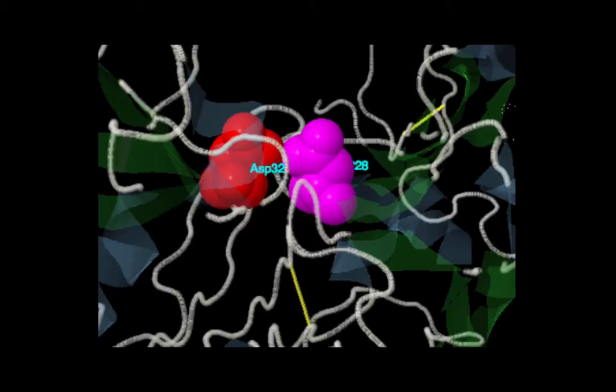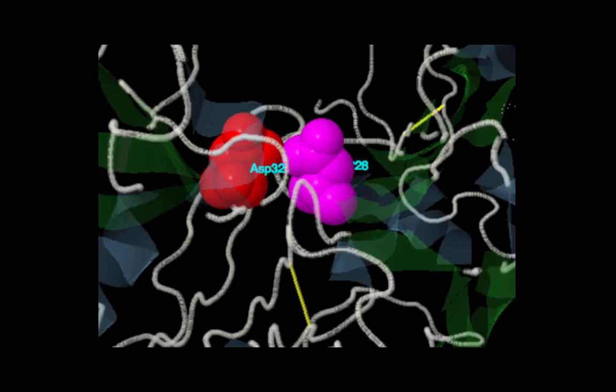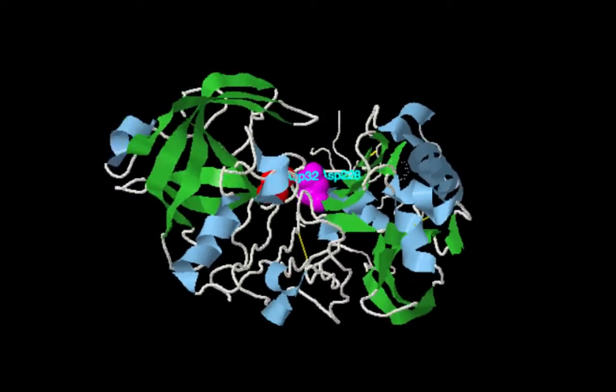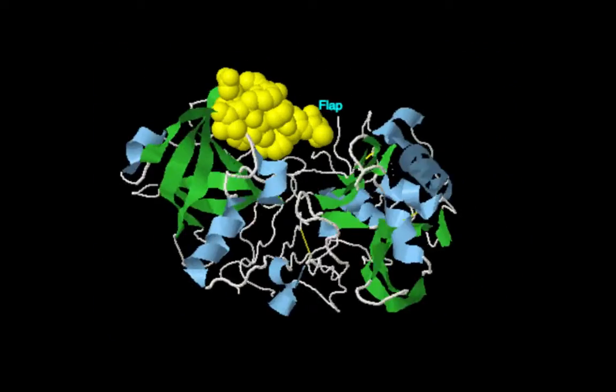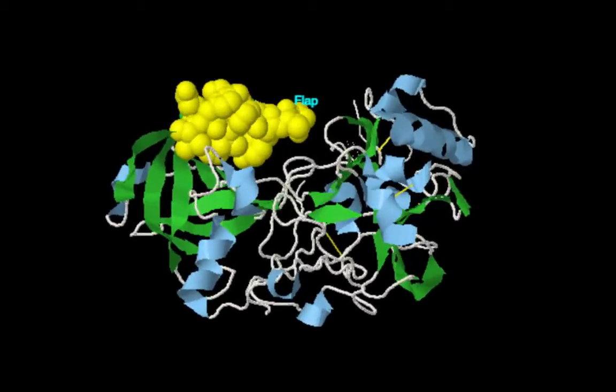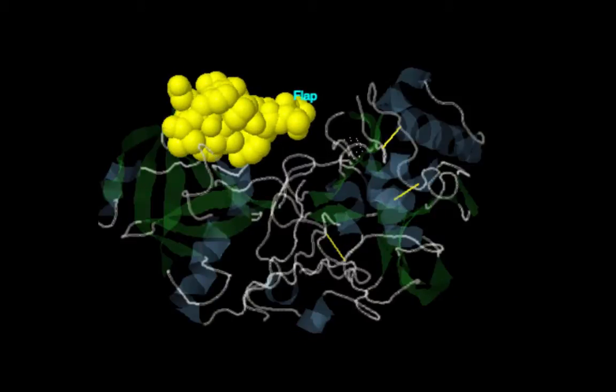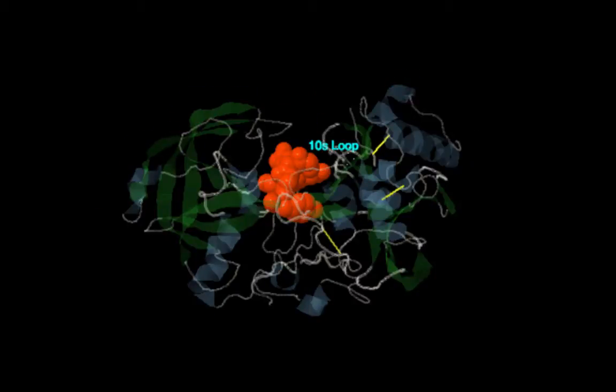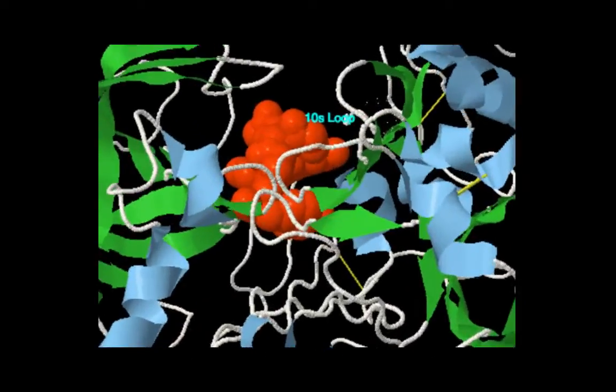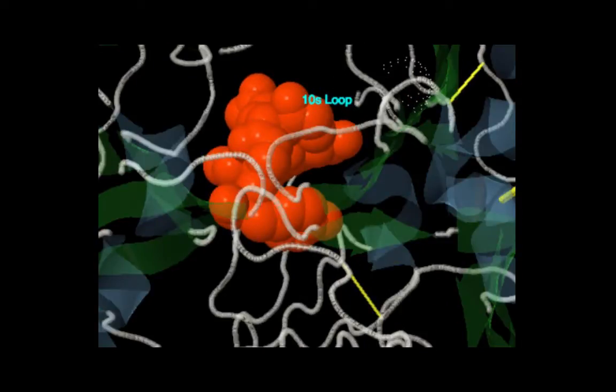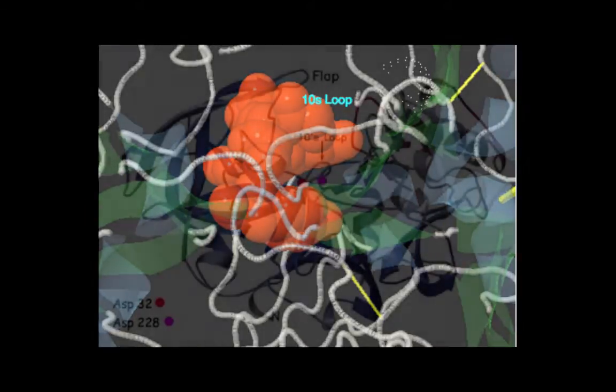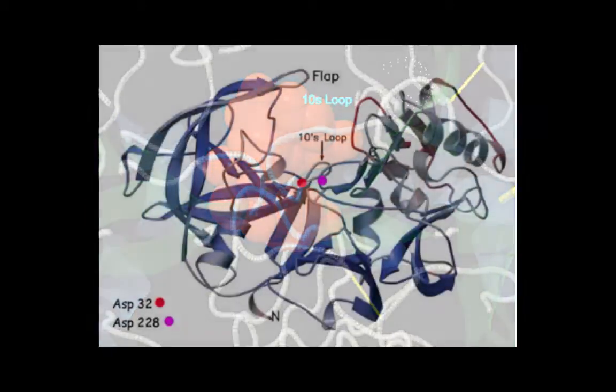Two other key structures reside in the active site of beta secretase, the beta hairpin loop and the 10S loop. The beta hairpin loop is also known as the flap and it serves to assist in the binding of the substrate. The 10S loop serves a similar function. In addition, many specificity pockets are present in this area to ensure the tight bonding between the enzyme and its substrate.